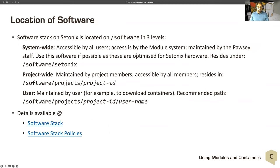The software is located on /software — we have a file system called /software. There is system-wide software accessible by all users, through the module system maintained by Palsy, and it is under /software/Cetonix. It's an easy name to remember.